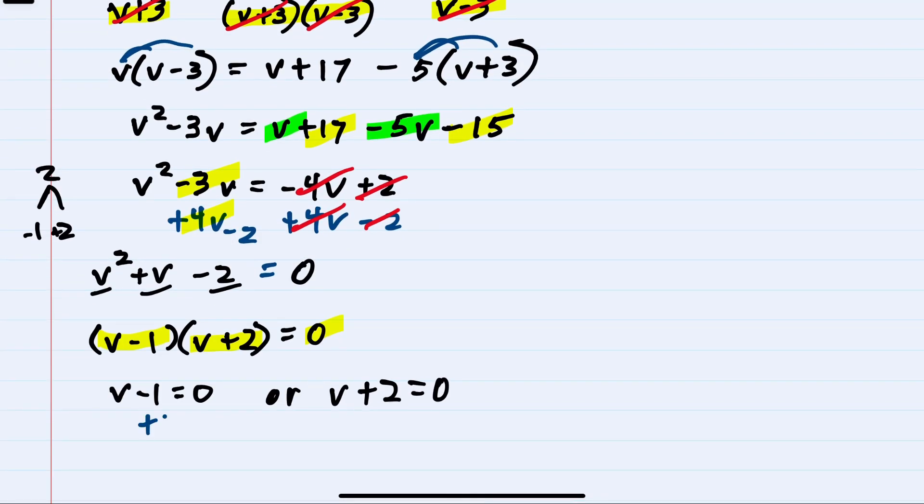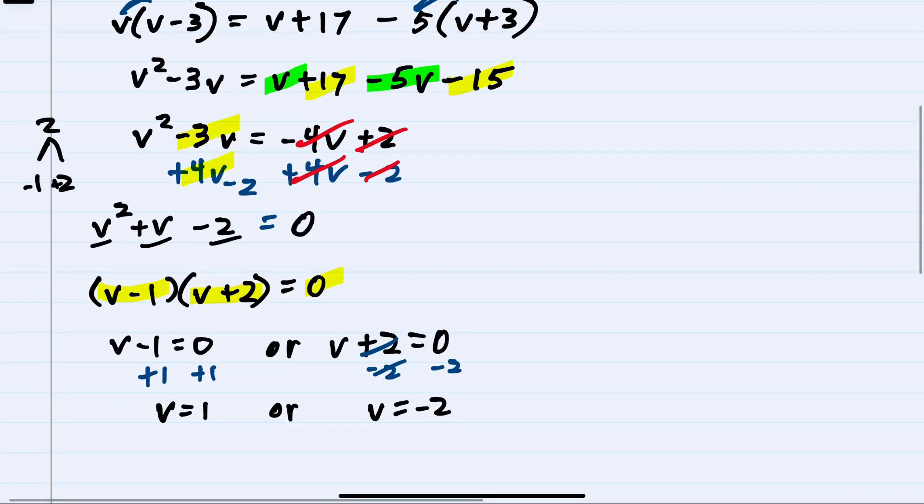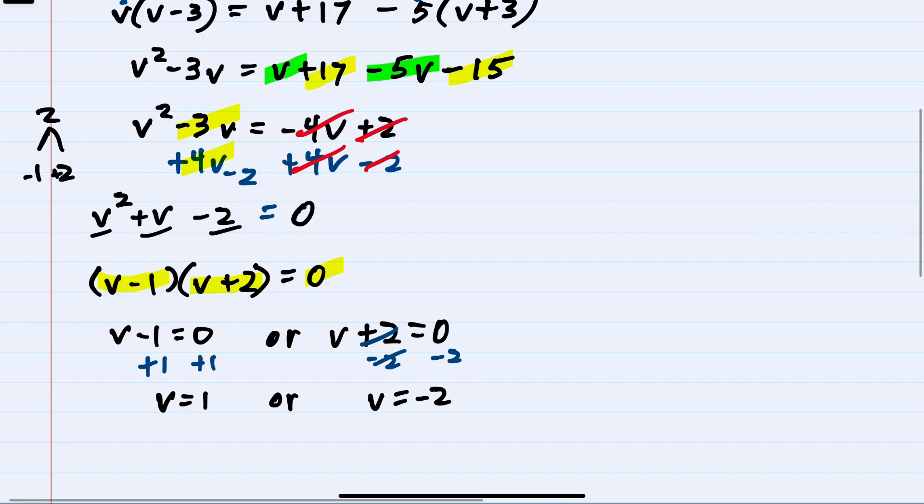Solving each for V, I have V equals one or negative two. So two potential solutions, V can be one or negative two. This is where we should look back at our original to make sure that plugging those values in do not give us a zero in the denominator. Neither one nor negative two gives us a zero here, so both of these are solutions. Writing them separated by a comma, our solutions are one and negative two.